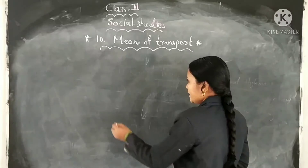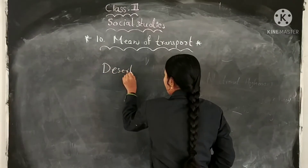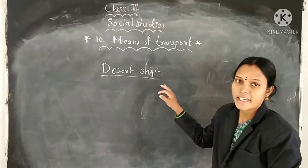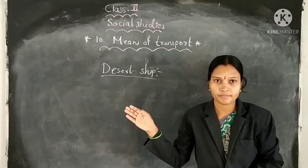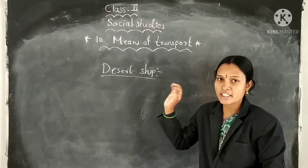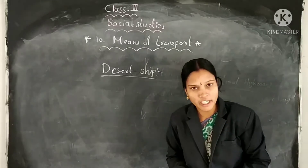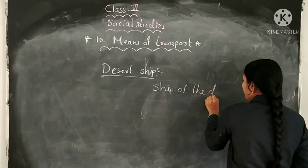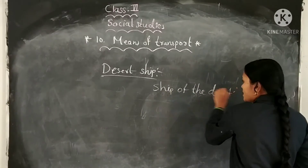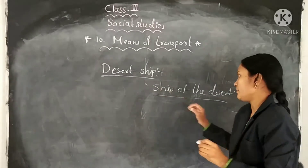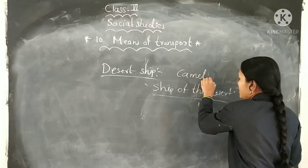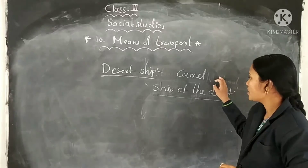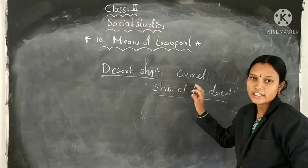Next topic is desert ships. In desert areas, camels are used for travelling. So the camel is known as the ship of the desert. Which animal is called the ship of the desert? Camels. In desert areas, camels are used for travelling and are known as the ship of the desert.